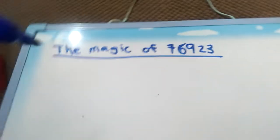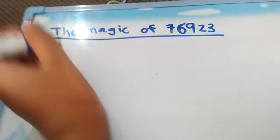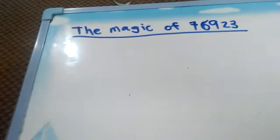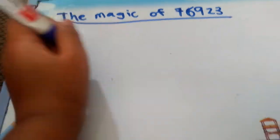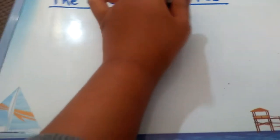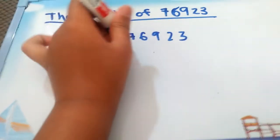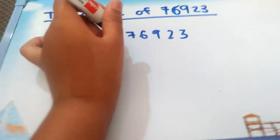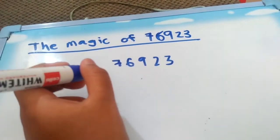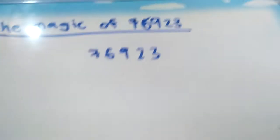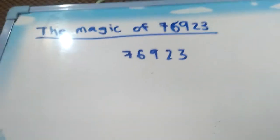In this video I'm going to tell you about the magic of 76,923. It is a special number like 142,857, but a digit changer. Also, its multiples up to 12 contain all the digits.